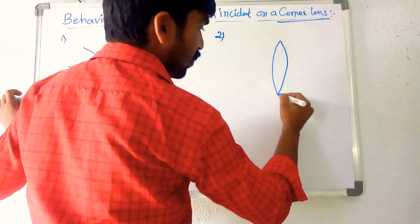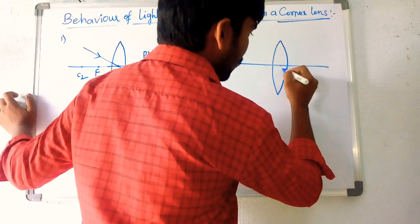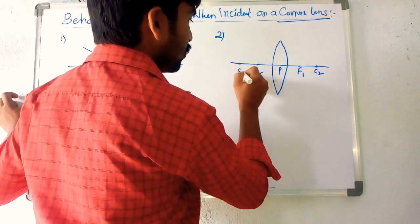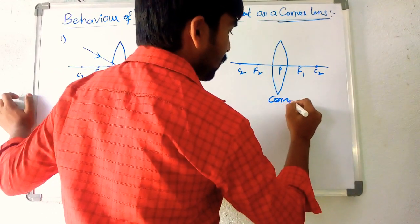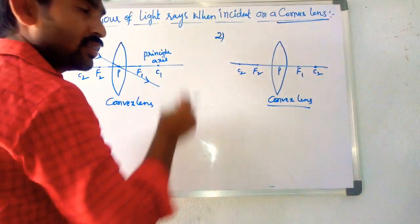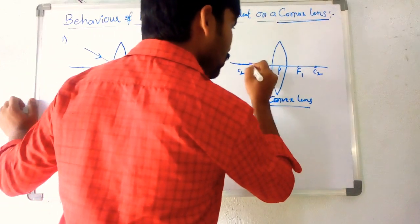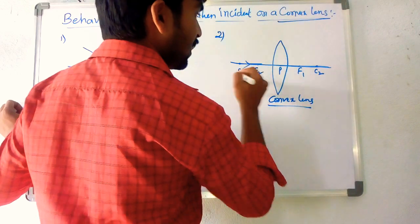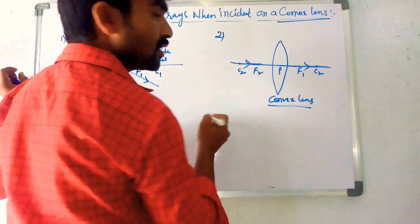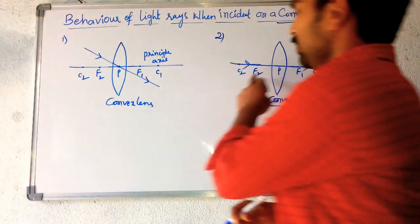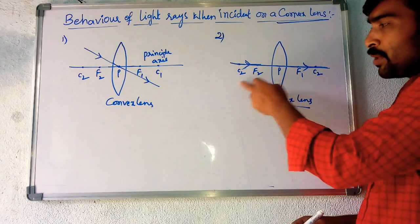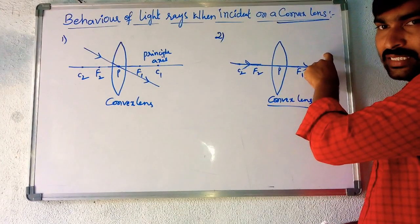What is the second rule? Take a convex lens — this is the optic center. When the light ray passes along the principal axis, the incident ray passing along the principal axis is also undeviated. It will not refract into another medium; it will continue in a straight path. The incident ray and the refracted ray follow the same path along the principal axis. This is the second rule.